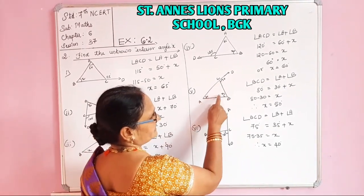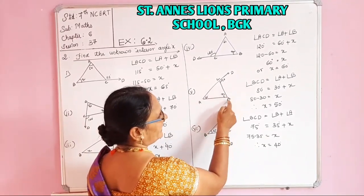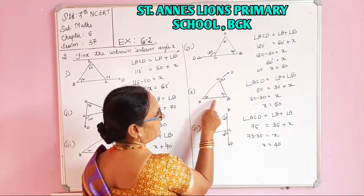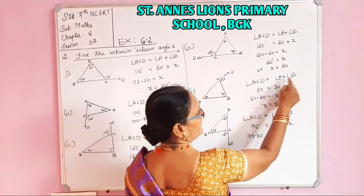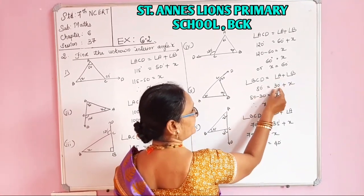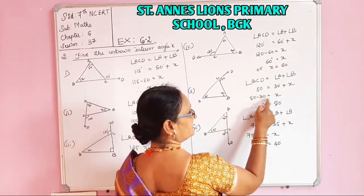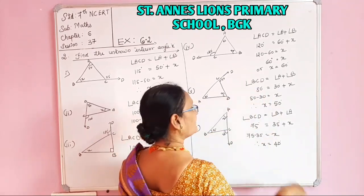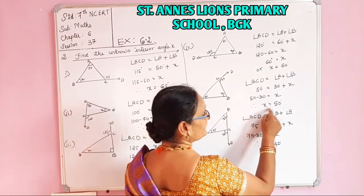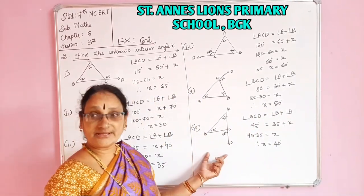Now the fifth one. Angles 80 degrees and 30 degrees, and this is X. The exterior angle is Angle BCD. Angle BCD is equal to Angle A plus Angle B. BCD is 80 degrees, Angle A is 30 degrees, Angle B is X. So 80 minus 30 equals X. Therefore X is equal to 50 degrees.